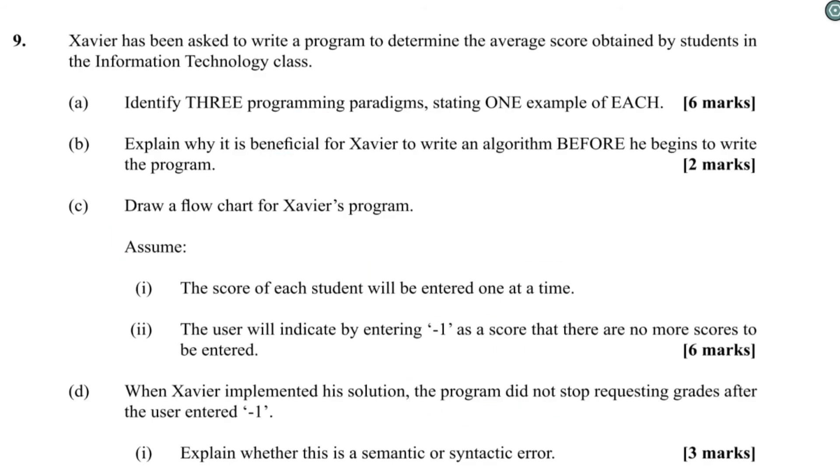All right. Xavier has been asked to write a program to determine the average score obtained by students in the Information Technology class. Identify three programming paradigms, stating one example of each. Okay, programming paradigms are fairly straightforward. There's procedural, which would be C; object-oriented would be Java or C++; functional would be like Lisp; and declarative would be like Prolog.